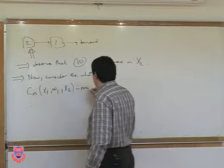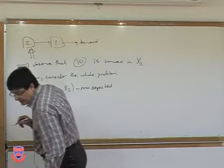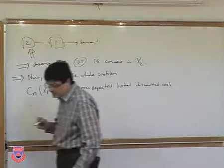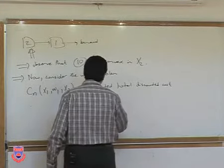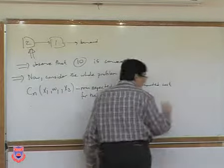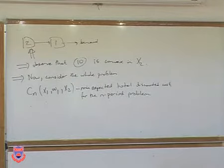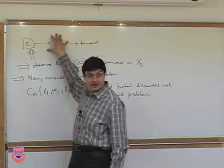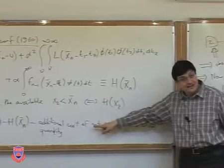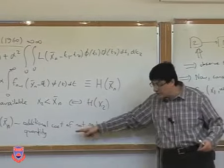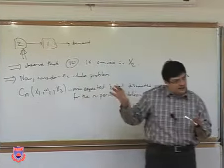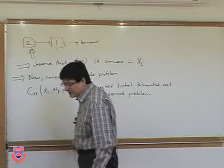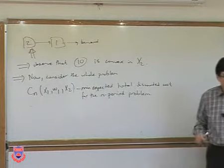This is by definition the minimum expected total discounted cost for the N-period problem. We are now considering both installations simultaneously — this is what we want to solve at every step. We have an idea on how to solve the individual problem, and we have seen that the effect on system cost due to the inability to satisfy installation one's order can be written in a very nice way.